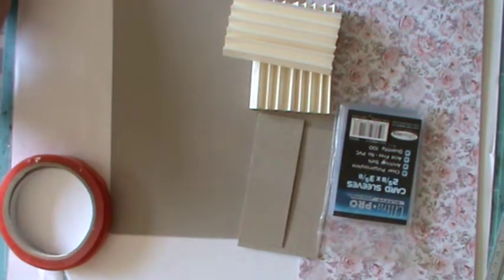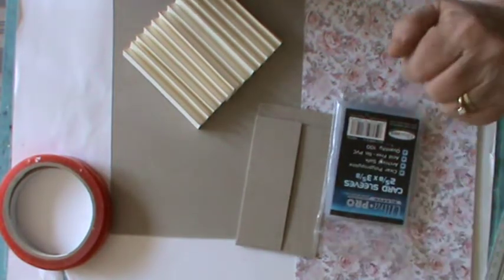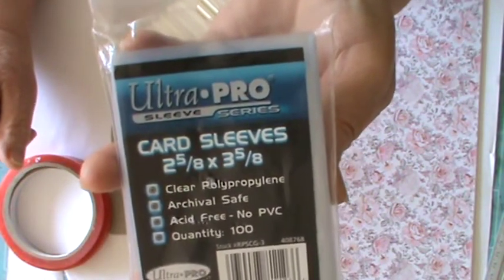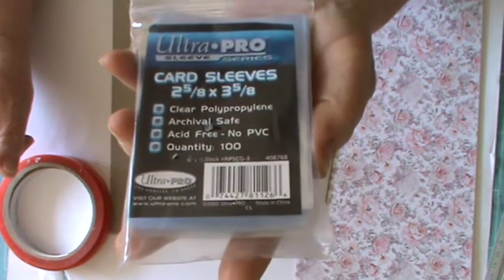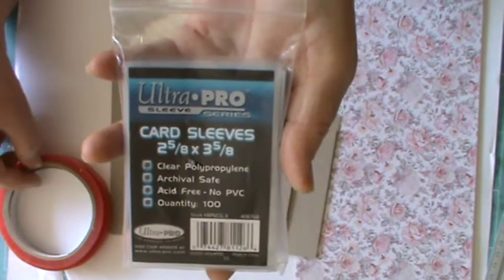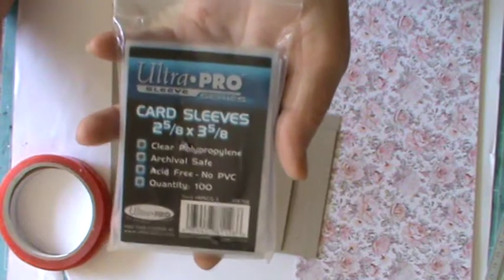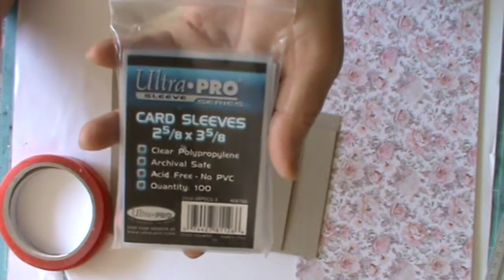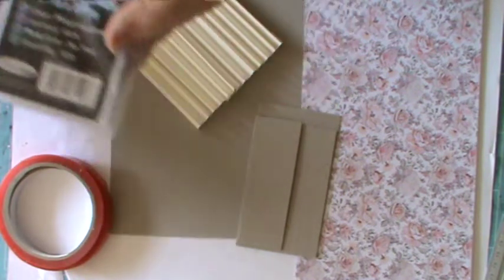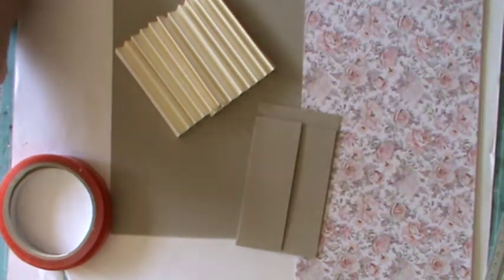On my work table here I have some good adhesive tape, some card, some designer paper, some grey board, and these Ultra Pro sleeve series which I purchased on Amazon. You get 100 for just under £3. The deal I got offered free postage and packaging. That's where you will find the individual sleeves for your ATC. You need for the way I do the project 12 sleeves.